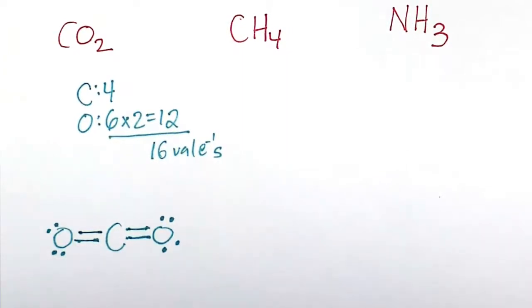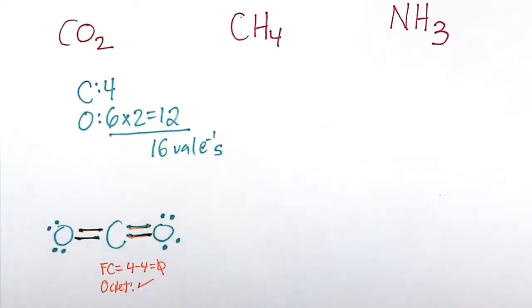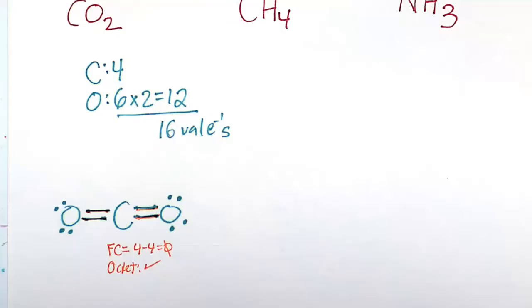Let's take a look at formal charge and octet rule consideration. Let's do the formal charge for this carbon here. So formal charge, 1, 2, 3, 4. Carbon is happy at 4. 4 minus 4 is 0. Let's do the octet rule for this carbon here. 1, 2, 3, 4, 5, 6, 7, 8. So the octet rule is satisfied, though there's many exceptions to the octet rule. You can definitely play fast and loose with it.